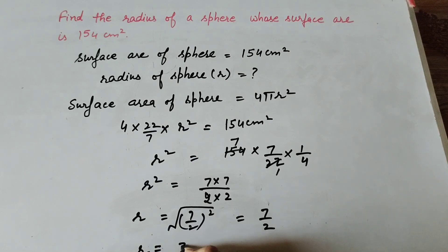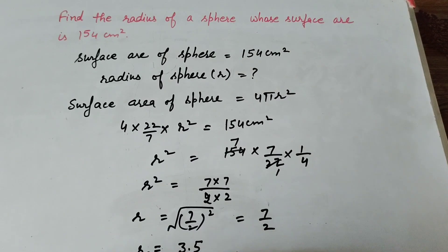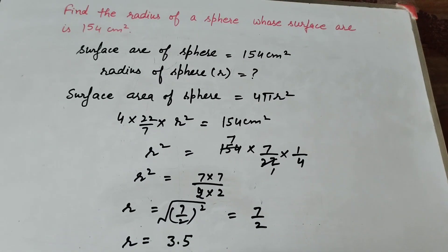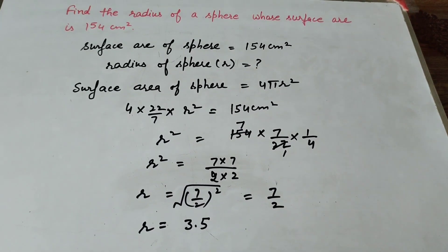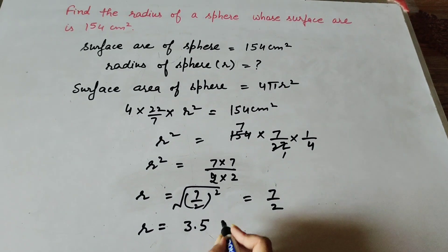.5. r equals 3.5. So the radius of the sphere is 3.5 centimeters. Thanks for watching, like, comment and share my video, and subscribe to my YouTube channel.